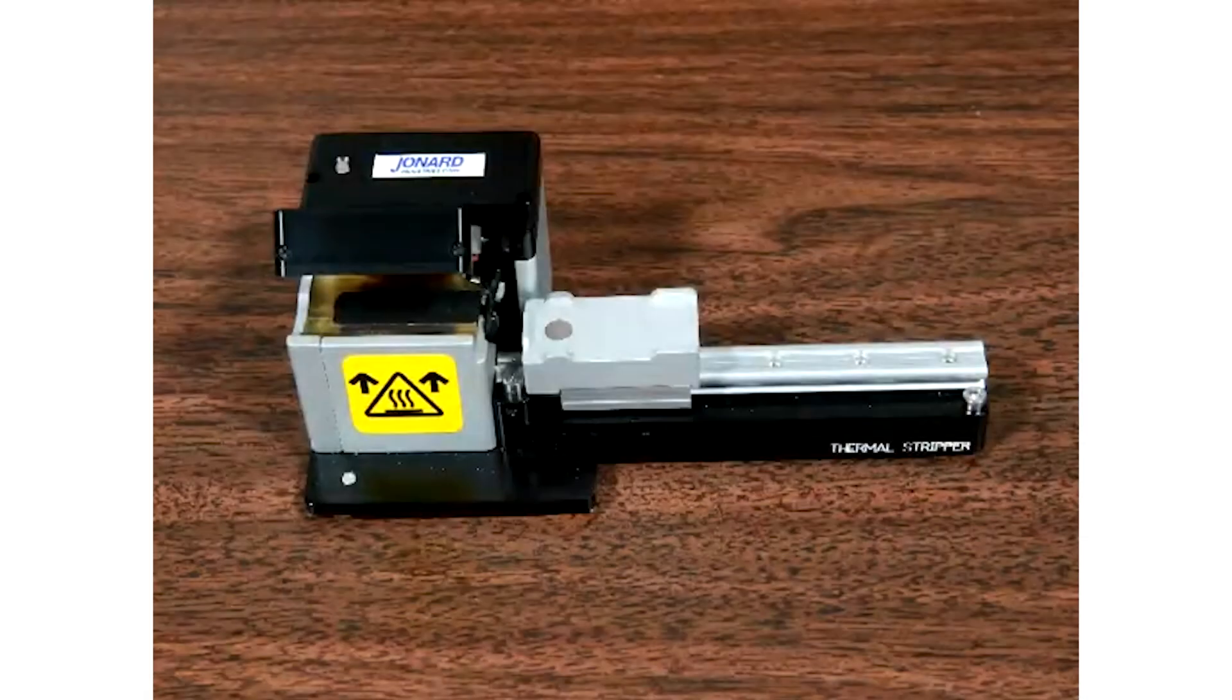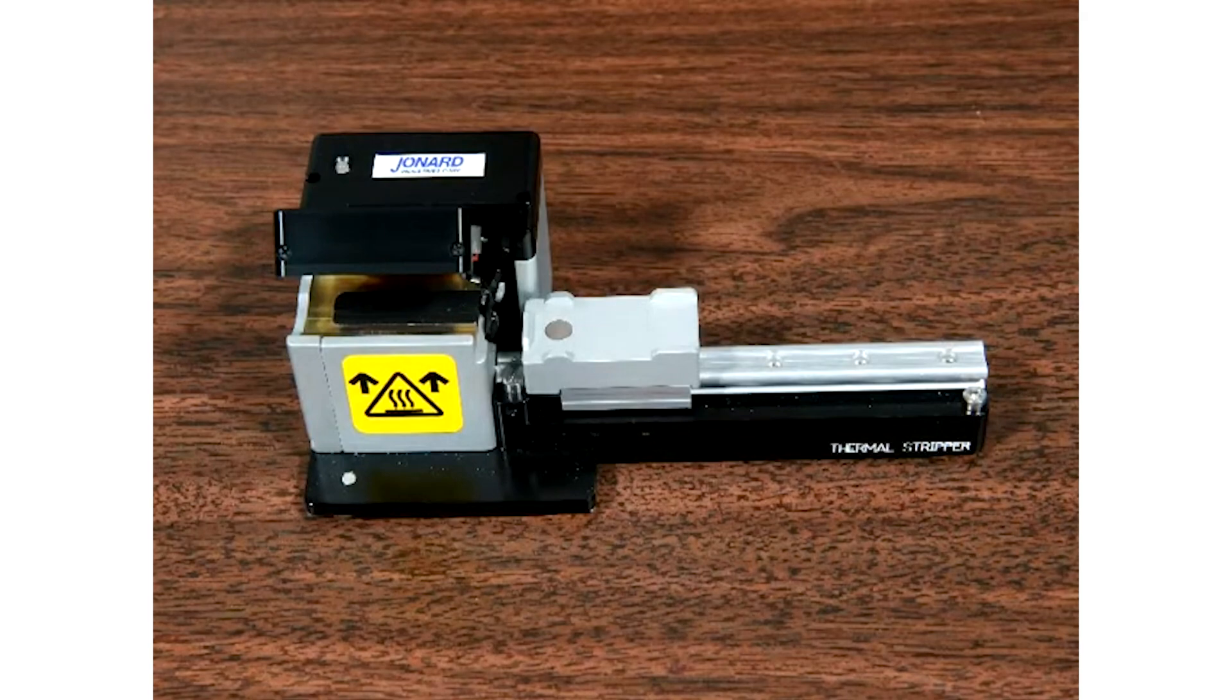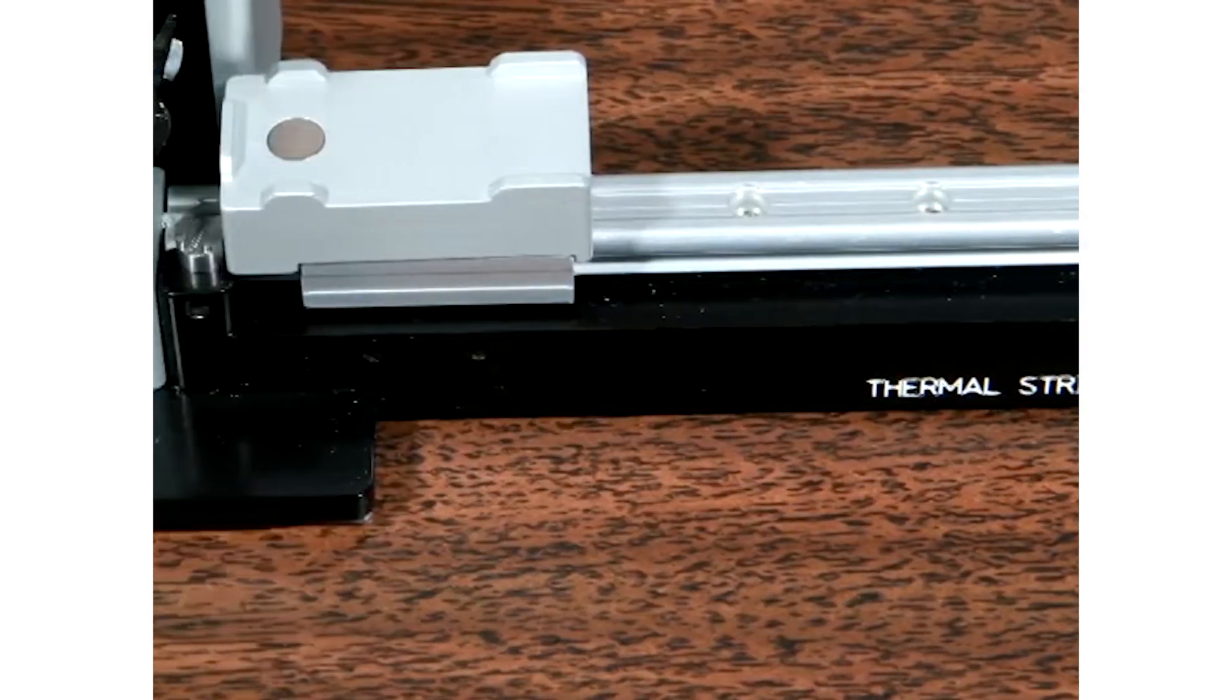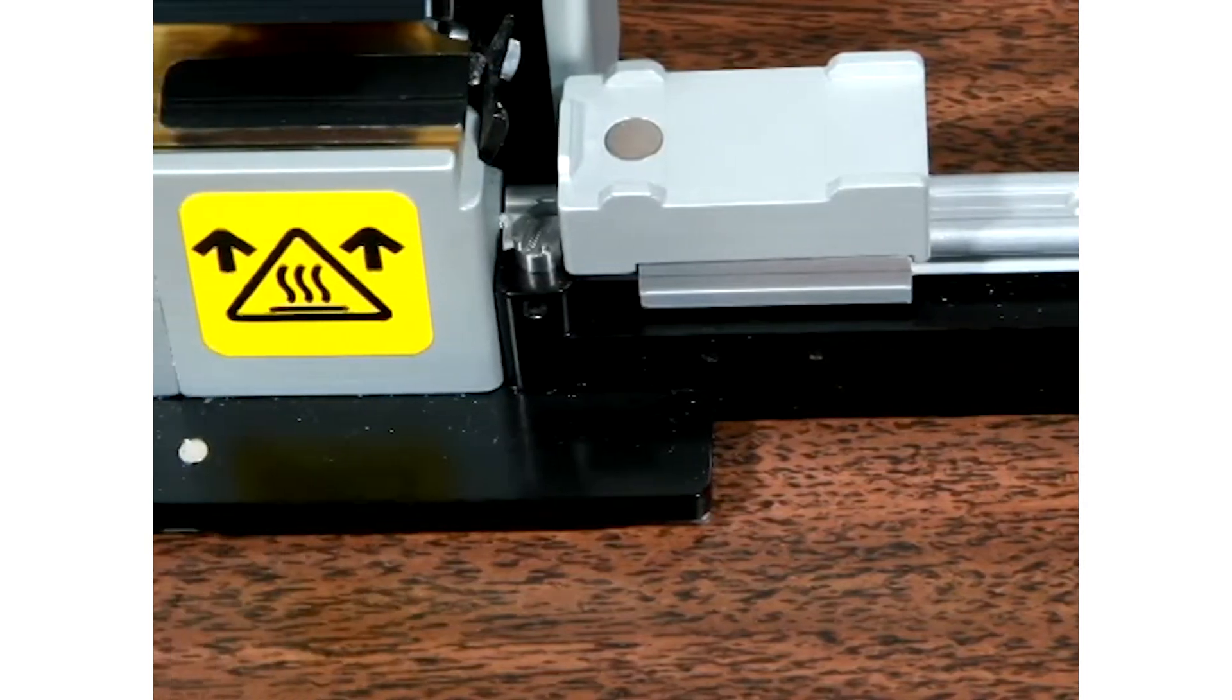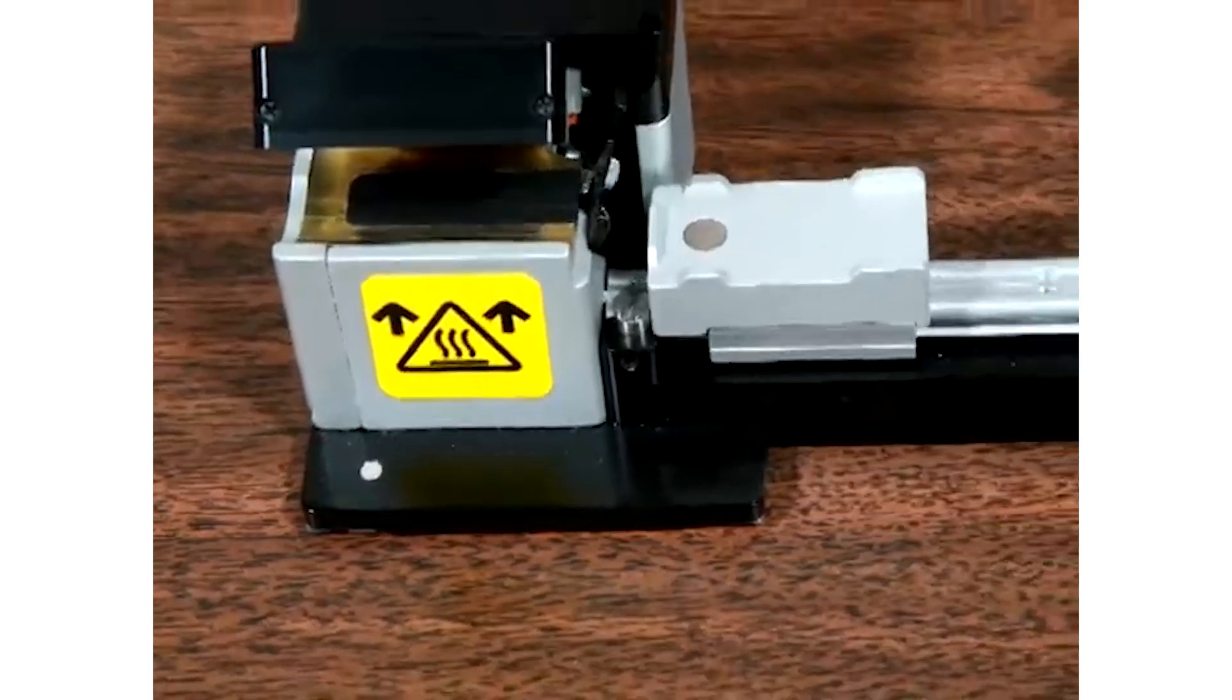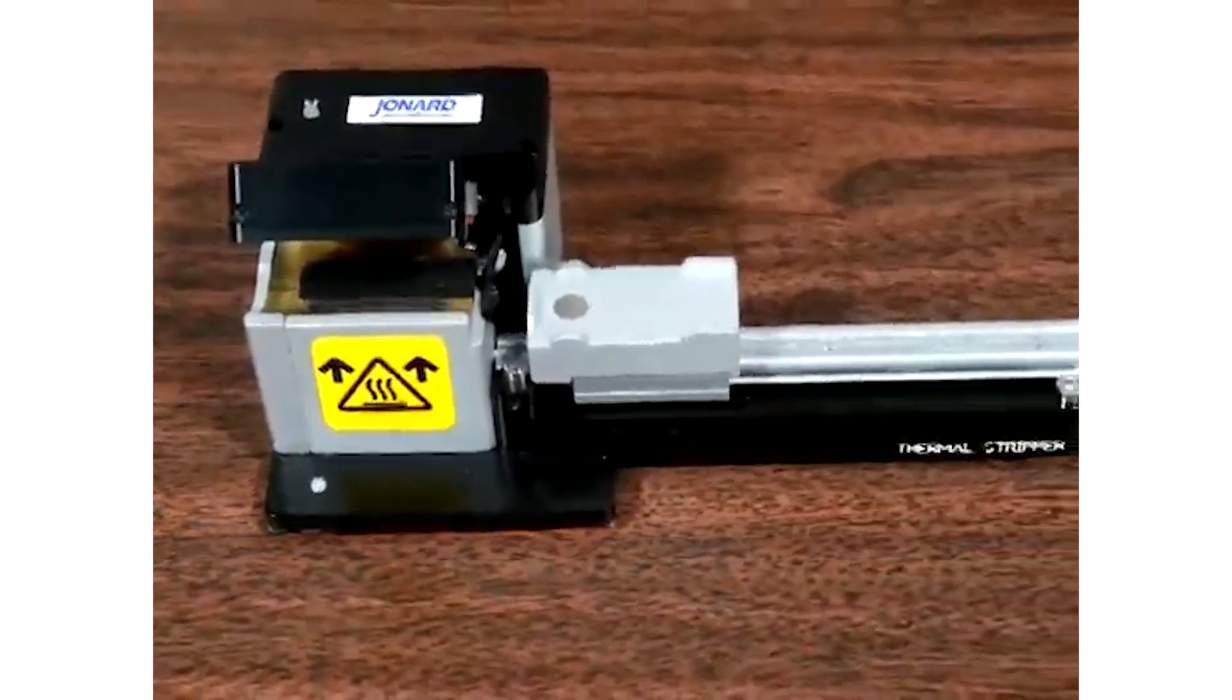The Jomnard T-SFB125 thermal stripper is designed to thermomechanically remove acrylic coatings from 125-micron glass optical fibers, including 250, 400, and 900-micron coated fibers.